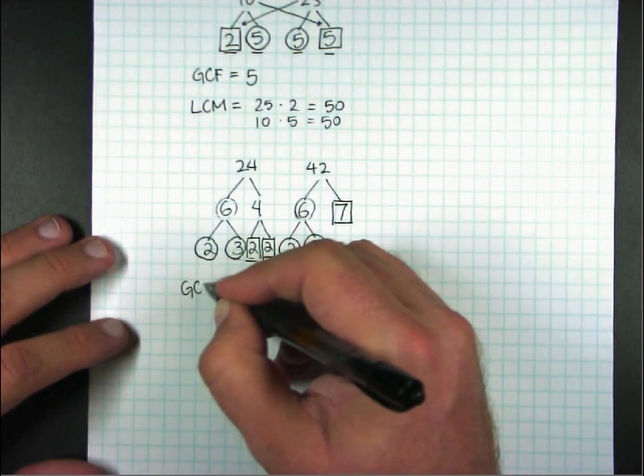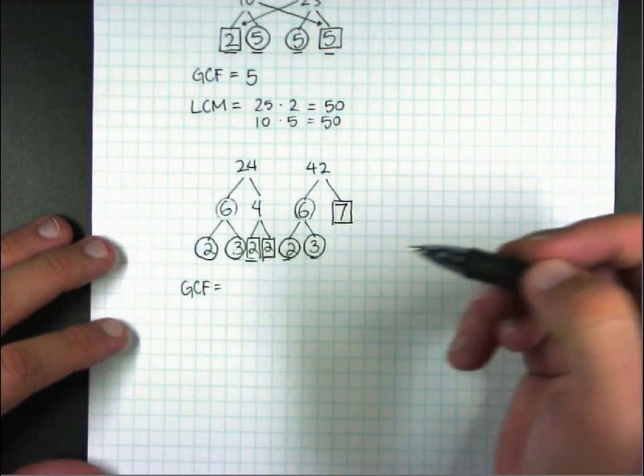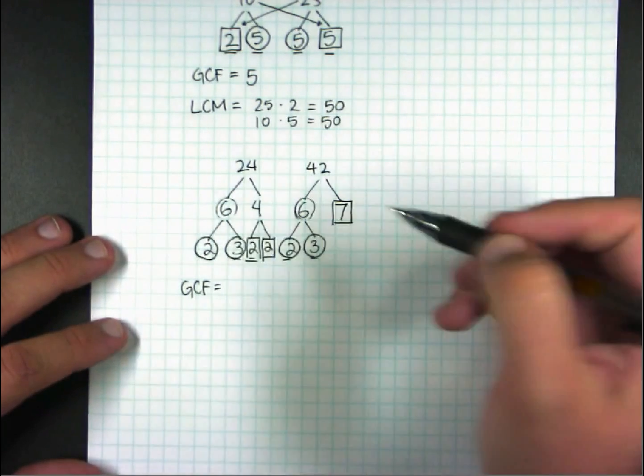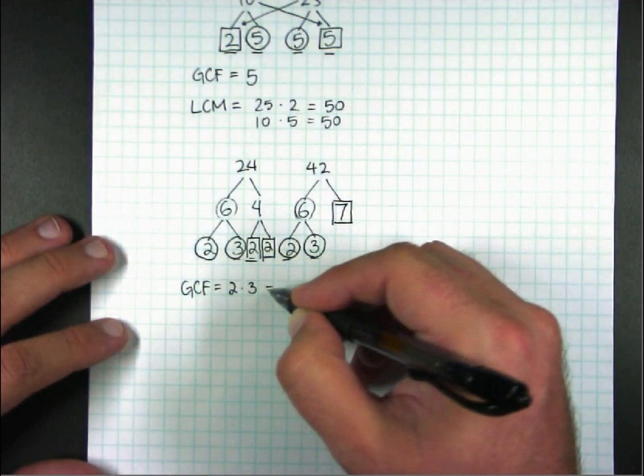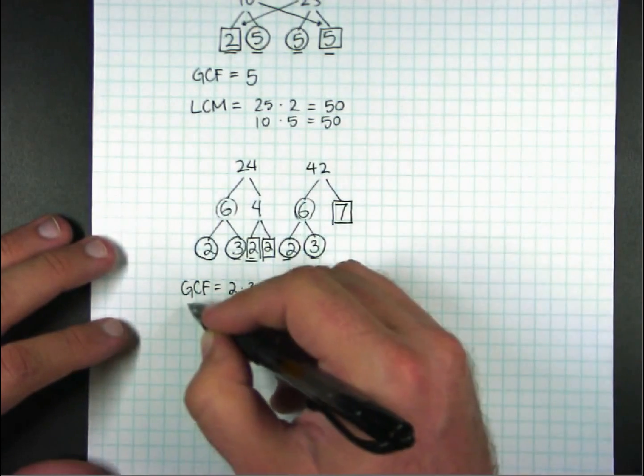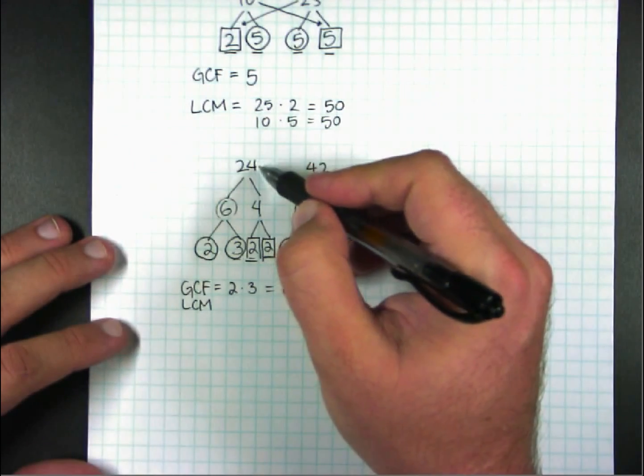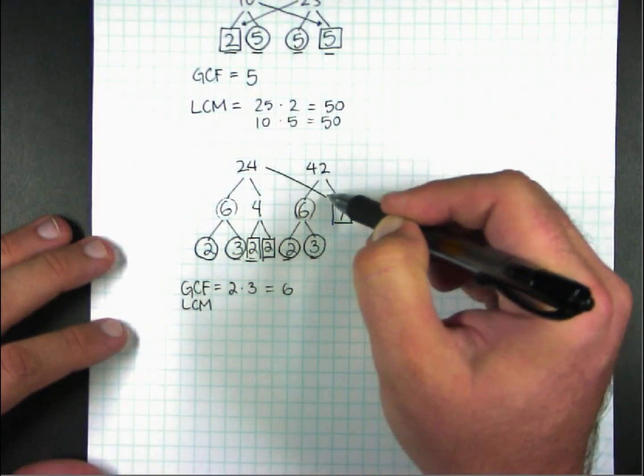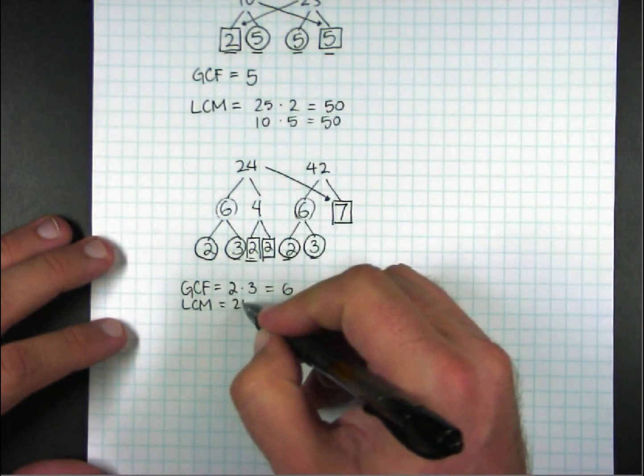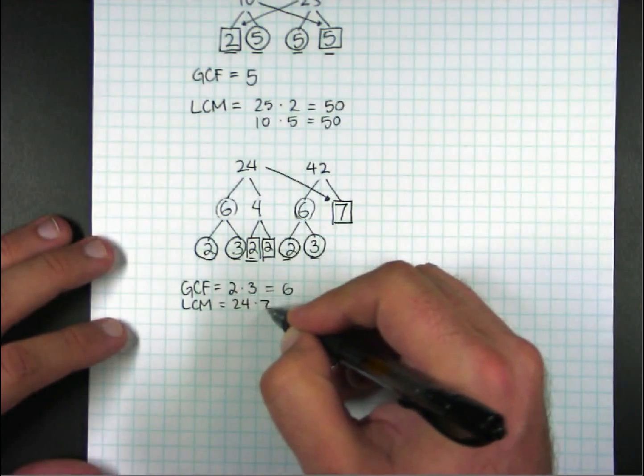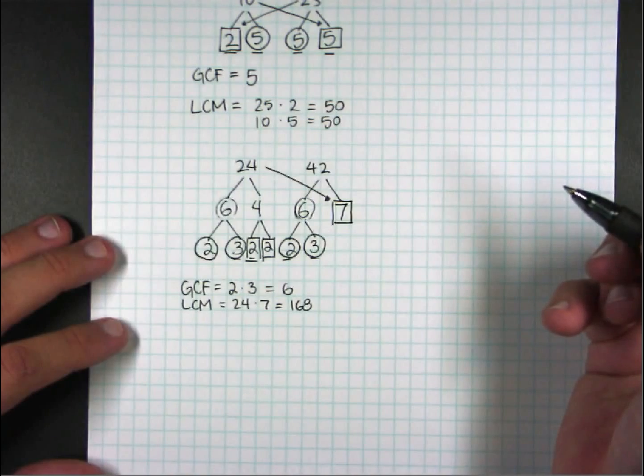The greatest common factor is going to be the factors that are circled for any single one. So, that would be 2 times 3 because they're in the circles. And that makes 6. The least common multiple will be one of the numbers times what's on the other side. 24 times 7 is 168. You'll have to believe me on that one.